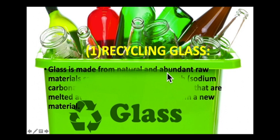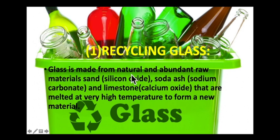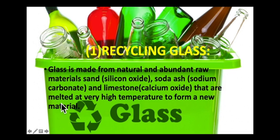Glass is made from natural and abundant raw materials like sand, silicon oxide, soda ash, sodium carbonate, and limestone - calcium oxide - that are melted at very high temperatures to form a new material: glass.